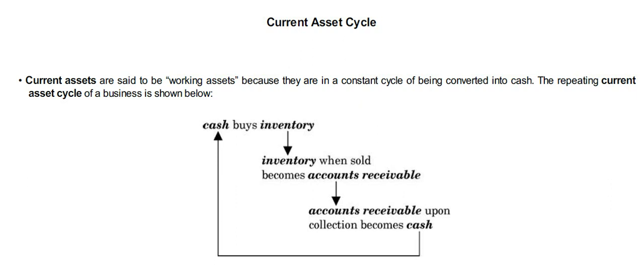Let's see the current asset cycle. Current assets are said to be working assets because they are in constant cycle of being converted into cash. Let's see the diagram here. An enterprise uses cash to buy inventory.